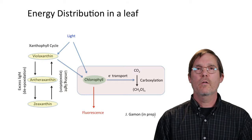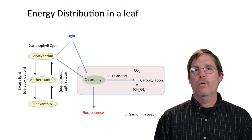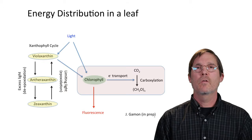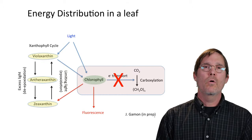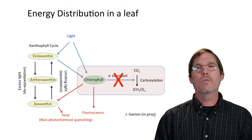Under extra light, the pigment violaxanthin is converted to antheraxanthin and then to zeaxanthin — that's called de-epoxidation. Under limiting light the reverse happens — epoxidation — and that occurs on a diurnal basis as the light changes. When there's a lot of extra light, this conversion kicks in and instead of driving photosynthesis, the extra energy can go to zeaxanthin from chlorophyll.